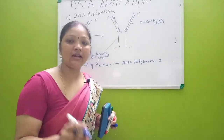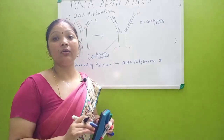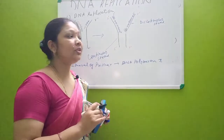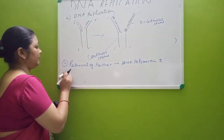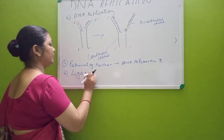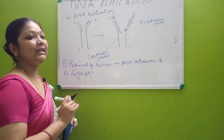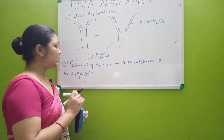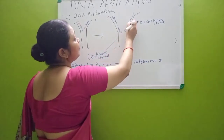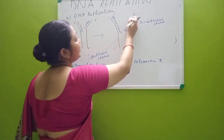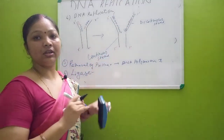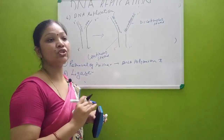After the nucleotide sequences are added where primers were removed, the sixth step is joining of the nucleotides. This is done by the enzyme ligase. Ligase forms bonds between the DNA segments, joining all the nucleotide sequences together.